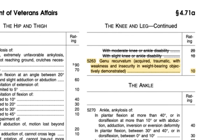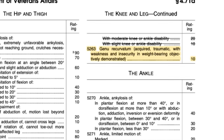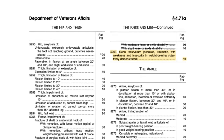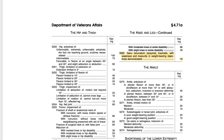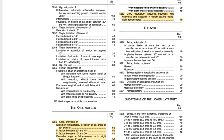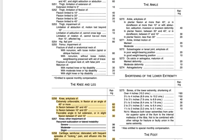How does the VA actually give you a percentage? We're going to look at the old document first. There's genu recurvatum — you can get 10% for that if your knee hyperextends. I've lined out some stuff that got changed, so don't pay attention to what's lined out.